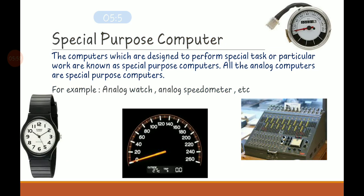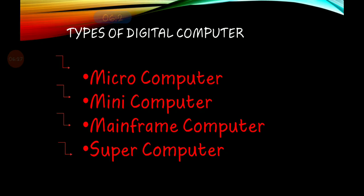Special purpose computers are computers designed to perform a specific task or particular work. All analog computers are special purpose computers. For example, analog watches, analog speedometers, and analog computers are special purpose computers. They use a continuous flow of data, that means analog signals.